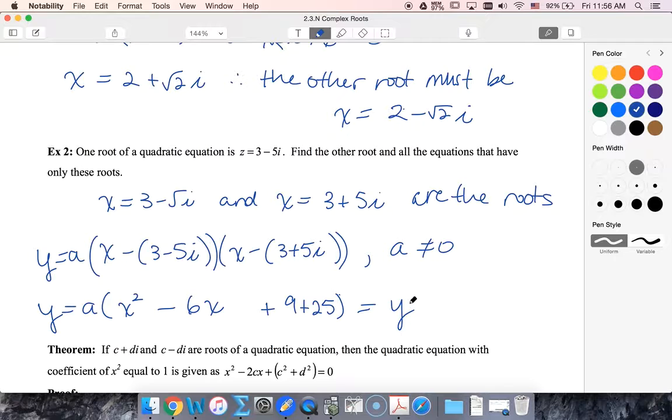So all of my forms are going to have a x squared minus 6x plus 34. And again, as long as a is not zero, this quadratic, no matter what a is, is going to have these two imaginary roots or imaginary zeros.